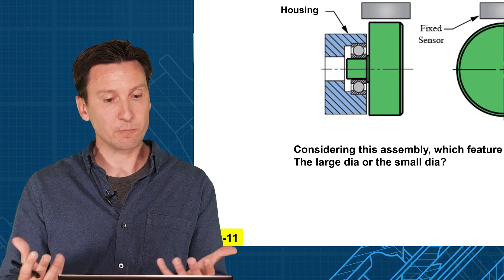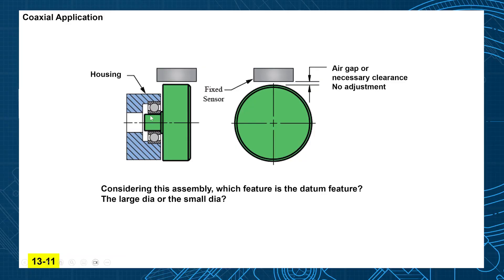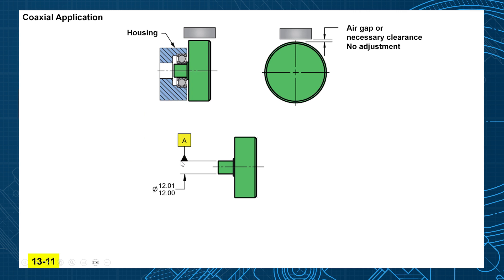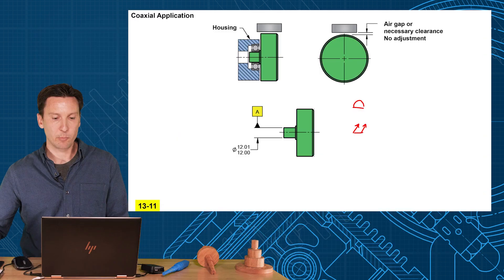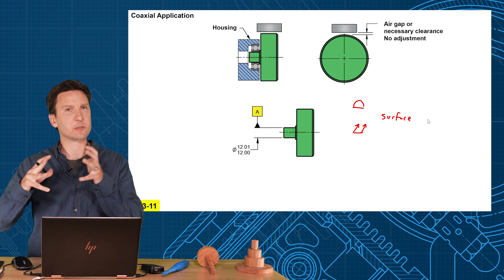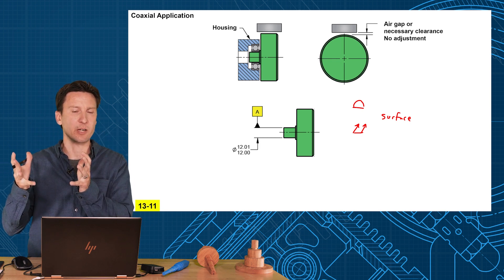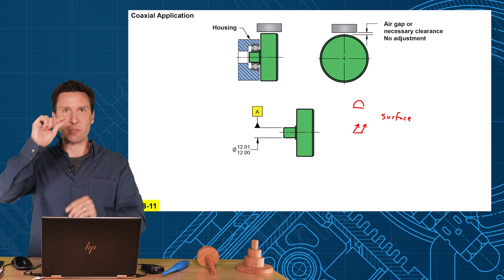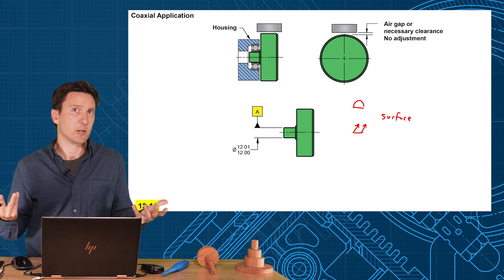So first we have to select the datum feature. This one's pretty obvious, I think, that one that mounts into a bearing is definitely going to be A, that creates our datum axis. And we want to keep this centered so that we get that certain air gap or clearance between the parts at all times. So our two options are profile and runout. They're both going to be surface controls, and that's what we want here. We don't want position because position is more of an axis of high points here, and we want the surface to be within the tolerance zone to control the gap. So what's the difference?